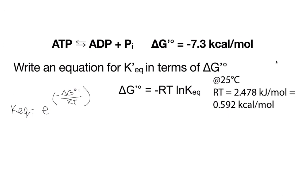Now write an equation for KEQ in terms of our delta G naught prime. We can rearrange things: KEQ is going to be equal to e to the negative delta G naught prime over RT. Now I can go ahead and plug in numbers. Our KEQ is going to be equal to e to the negative of negative 7.3 over 0.592 — we're in kcal per mole here, so that's why I'm using this value. Before you actually enter this into your calculator, let's do some intuition — what would we expect?